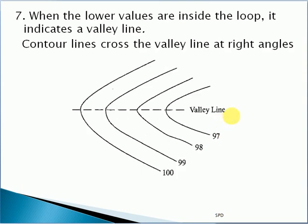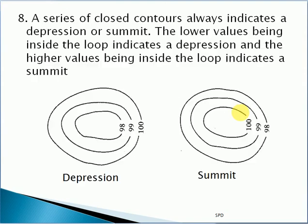Contour lines cross the valley line at right angles. A series of closed contours always indicates a depression or a summit.